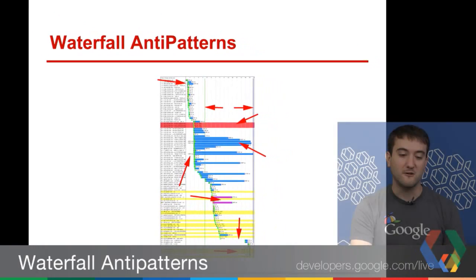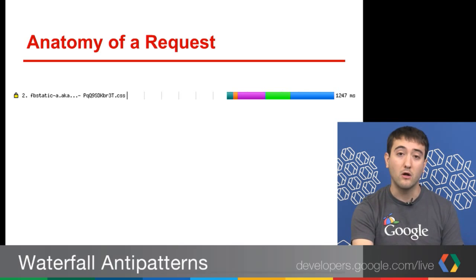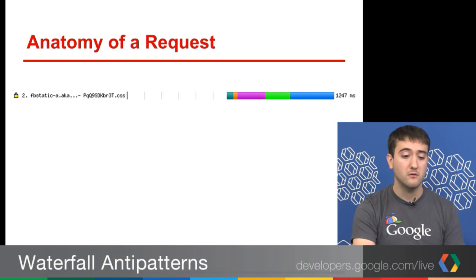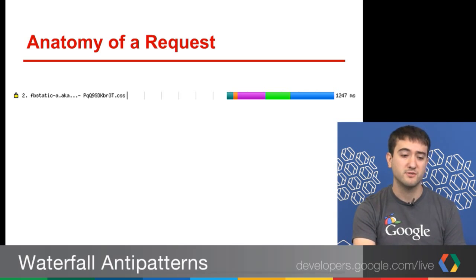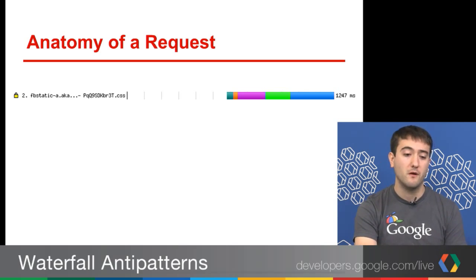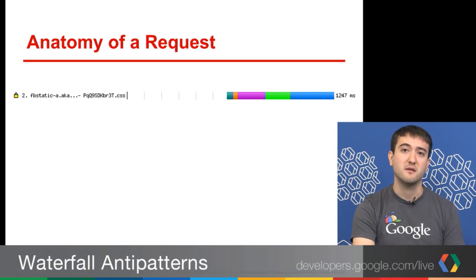This is the high-level view of a waterfall. Let's dig down and look at the anatomy of a request. Starting all the way at the left, we see a little padlock icon indicating this is a secure request made over SSL. Next is the number two, indicating this was the second request to occur, followed by a center-truncated domain name and resource name. The domain here is FB static, and the resource is a bunch of numbers and letters dot CSS. This is helpful just at a glance to see what type of request this is.